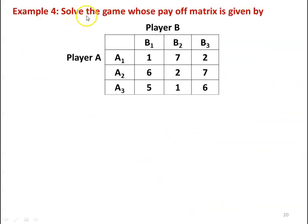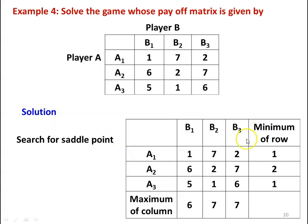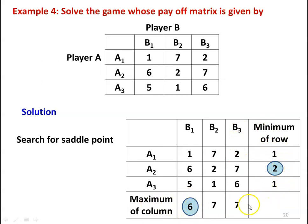Example number 4: solve the game whose payoff matrix is given. Player A has three strategies A1, A2, A3; player B has three strategies B1, B2, B3. The matrix is: A1 — 1, 7, 2; A2 — 6, 2, 7; A3 — 5, 1, 6. Row minima are 1, 2, 1 respectively. Column maxima are 6, 7, 7. The maximin is 2 and the minimax is 6 — they are not equal, so there is no saddle point.